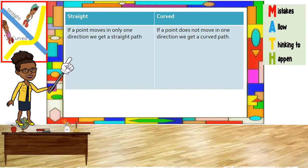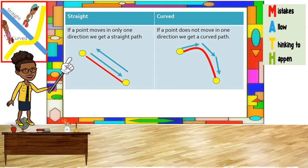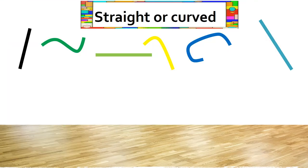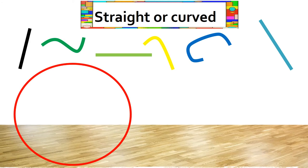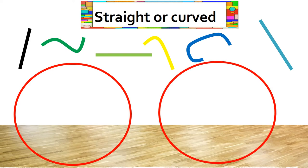Remember, boys and girls, if a point moves in only one direction, we get a straight path. And if the point keeps changing directions, we get a curved path. Now, let us look at these paths — are they straight or curved? Let us group them.